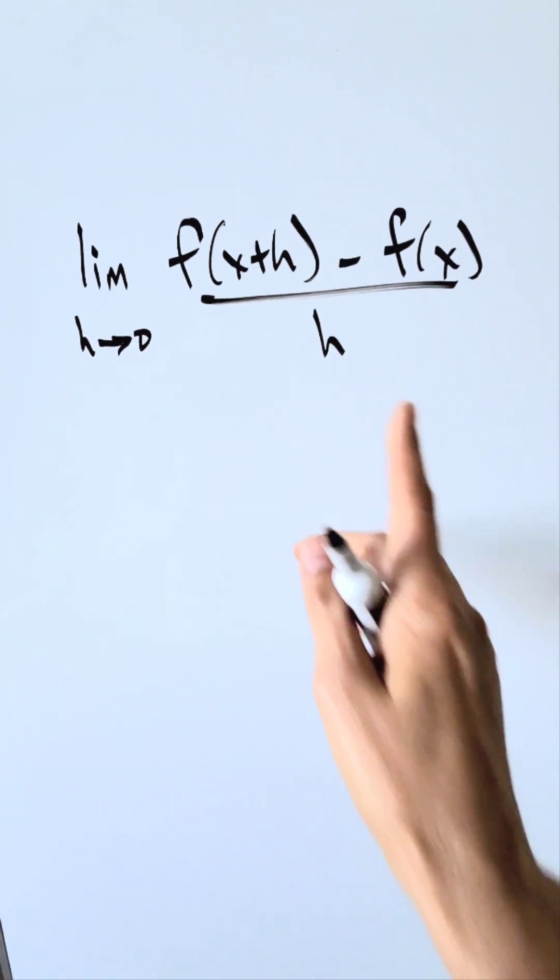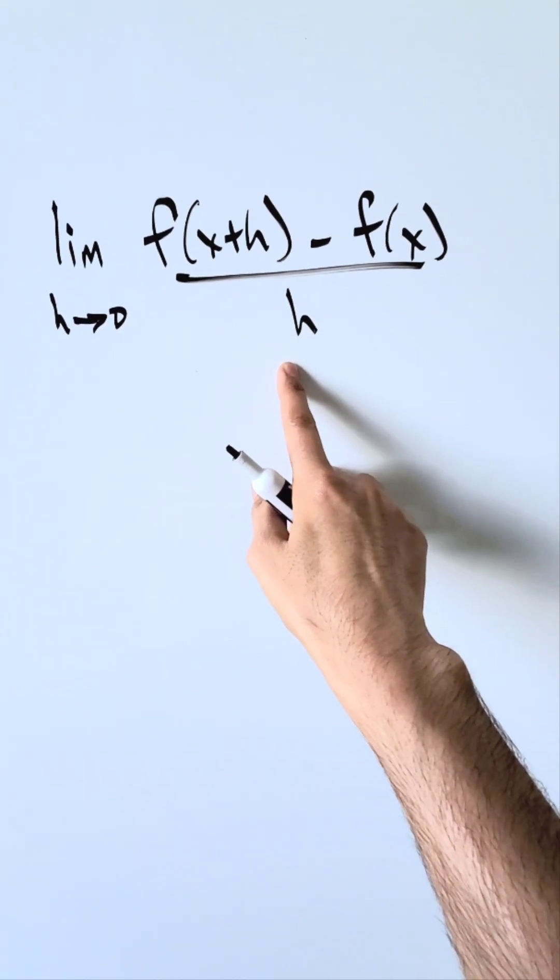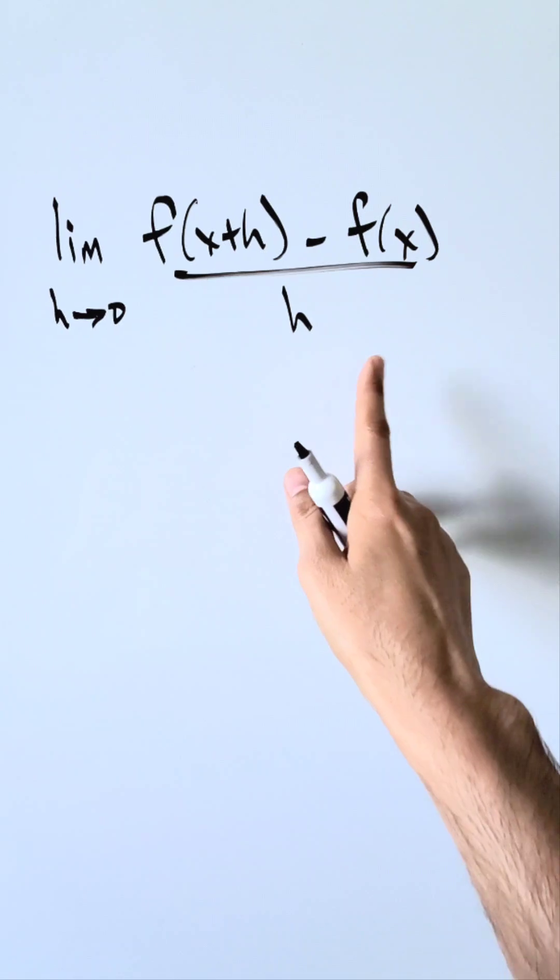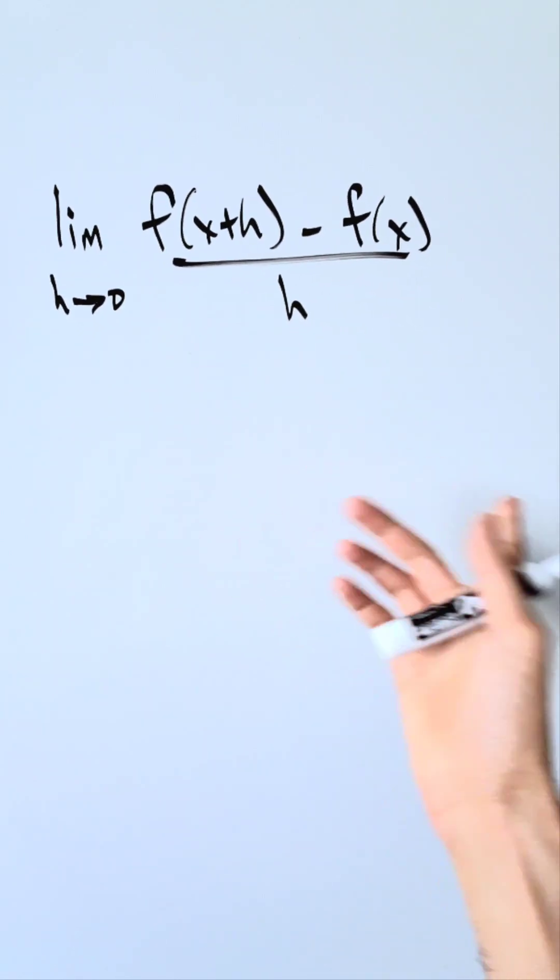Look here at this basic definition of derivative, you know what this is. Let's apply this basic definition to our function natural log x and see what happens.